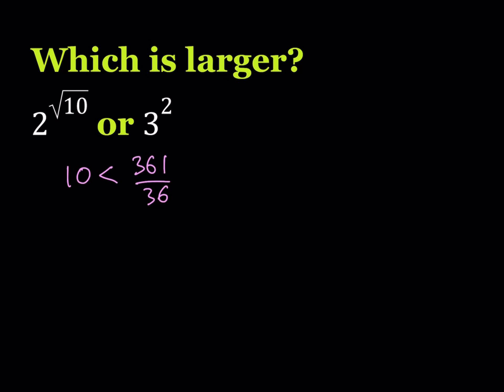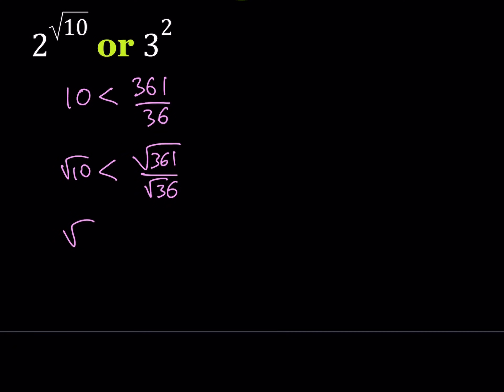Now if you go ahead and square root both sides — this is what makes it really nice. You're going to take the square root of 361 and the square root of 36. The square root of 361 is 19 and the square root of 36 is equal to 6. So you can basically say that square root of 10 is less than 19 over 6, and it's actually pretty close.